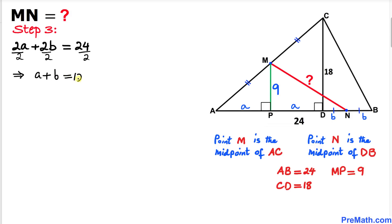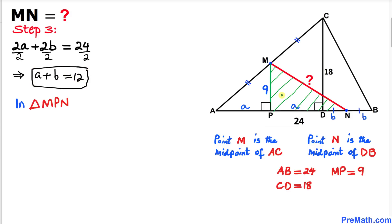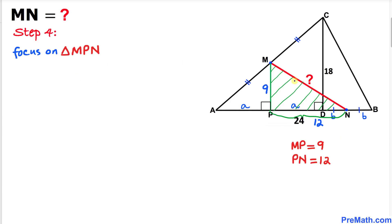Now focusing on triangle MPN, side length PN equals a plus b, and since a plus b is 12, this side length turns out to be 12 units.